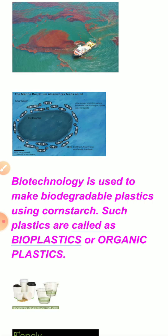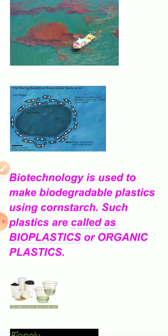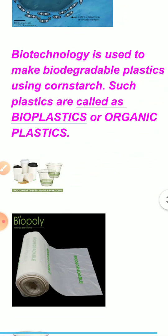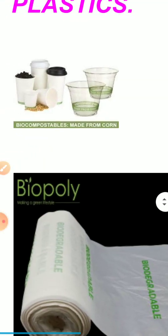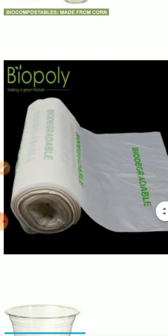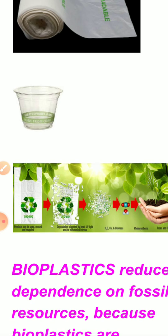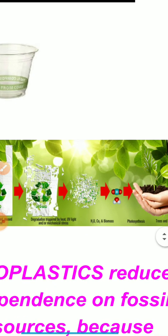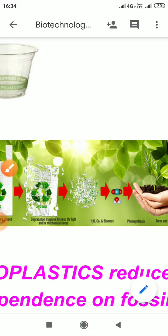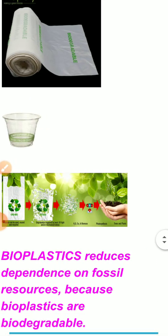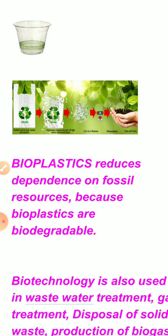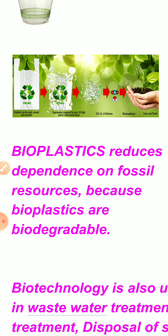Biotechnology is also used to make biodegradable plastics using corn starch. Such plastics are called bioplastics or organic plastics. We can see figures showing a biocompostable item made from corn, and the degradation of bioplastic — molecules getting mixed up into the soil. These types of plastics will not harm the environment, and bioplastics reduce dependence on fossil resources, unlike traditional plastics which use raw materials from the petroleum industry.